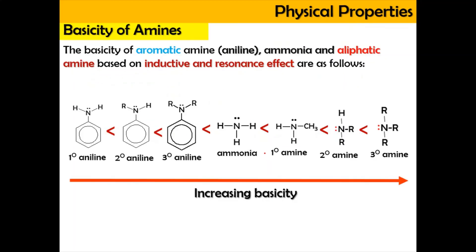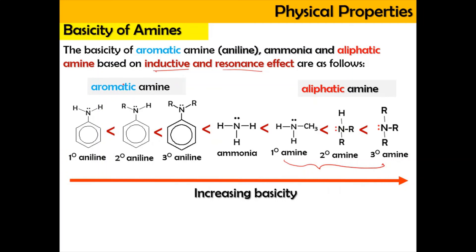Due to the inductive and resonance effects, the overall basicity ranking is: tertiary aliphatic amine > secondary aliphatic amine > primary aliphatic amine > ammonia > aniline (aromatic amine). Ammonia acts as a reference in the middle of this scale. Tertiary and other aliphatic amines are more basic than the aromatic amine.